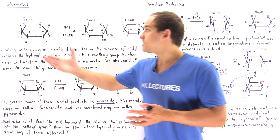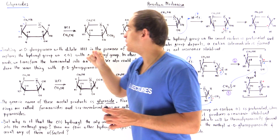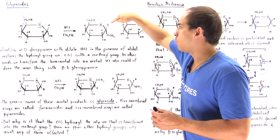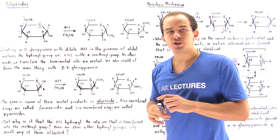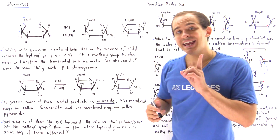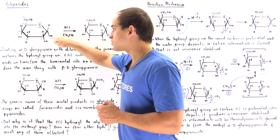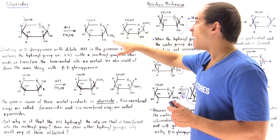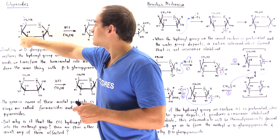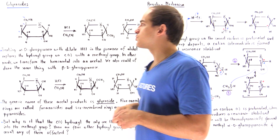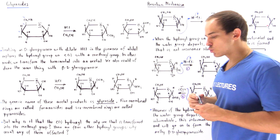In other words, we transform the hemiacetal portion into the acetal portion. The question we should be wondering is: why is it that only this hydroxyl group is replaced by our methoxy? Why aren't the other hydroxyl groups on the other carbons also replaced by our methoxy group?